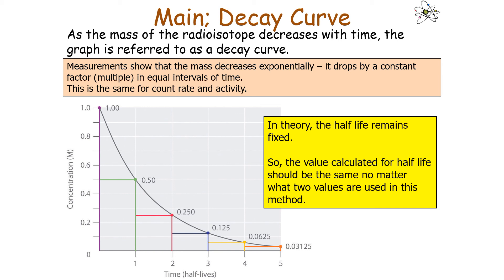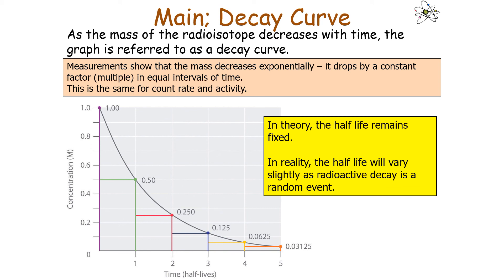In theory, the half-life remains fixed, so the value calculated should be the same no matter which pair of values is used — whether 1 and 0.5, 0.6 and 0.3, or 0.5 and 0.25. However, in reality, the half-life will vary slightly because radioactive decay is a random event. Such variations are not due to experimental error but are expected because of the random nature of the decay.